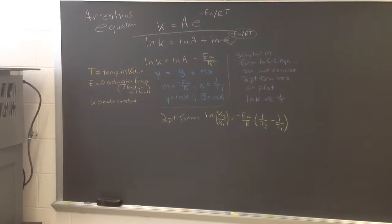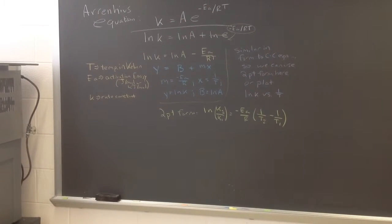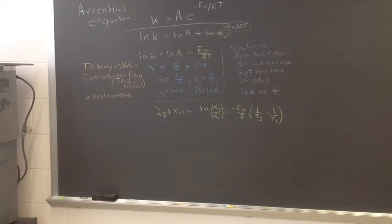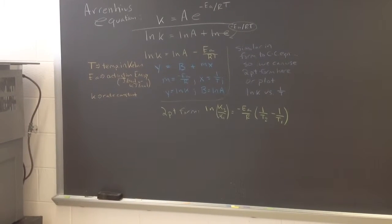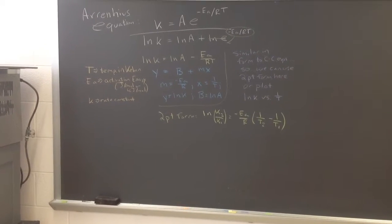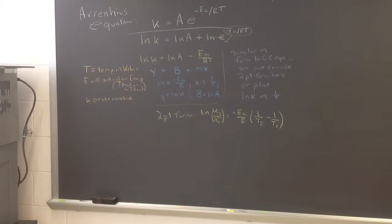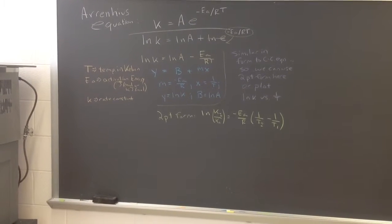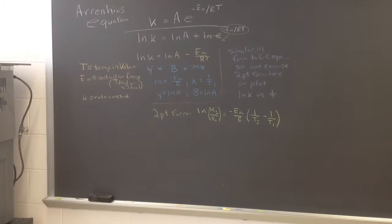Y is the natural log of our rate constant. The slope is the negative E sub A over R. So if we determine the slope from a plot of data, plotting the natural log of rate constant versus one over temperature in Kelvin from a series of measurements, we can get the slope of that line, and from that we can solve by multiplying the slope times negative R, we get E sub A, our activation energy.